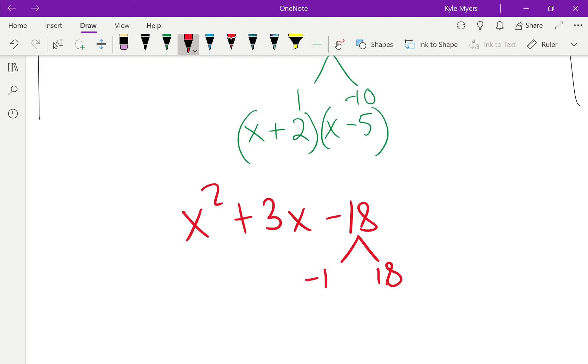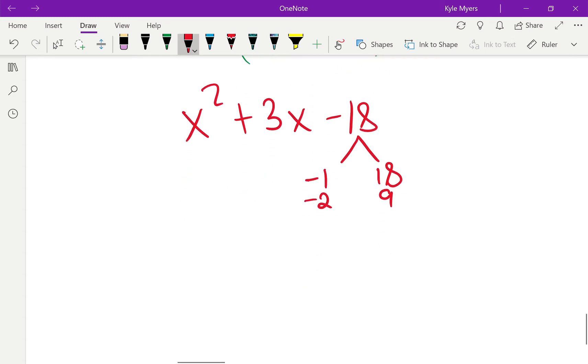So if I make that negative, I'll get a positive number. So negative 1 plus 18, a.k.a. 18 minus 1 would be 17. That's way too high. We're going to keep going. If I do it again, I get 2 and 9. Well, that's still too high. That's going to give me 7. So what's next?